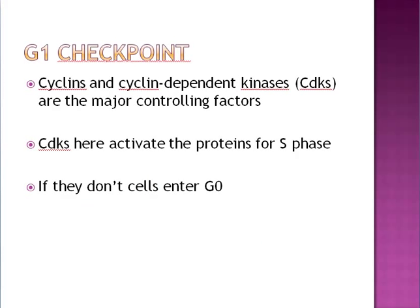The first checkpoint at G1 involves proteins called cyclins and cyclin-dependent kinases (CDKs). They are the controlling factors, and basically if they're activated, you're going to proceed into the S phase — they activate the proteins that function in the S phase, like helicases and polymerases. If they do not do their job, then the cell enters G0, which is a non-dividing phase, and cell division will never occur.